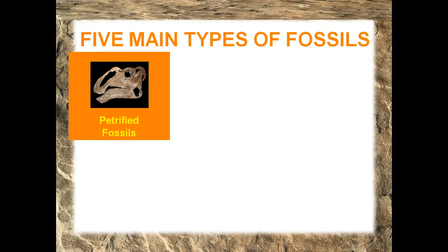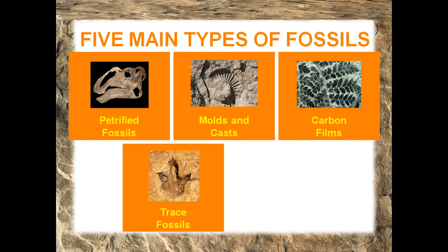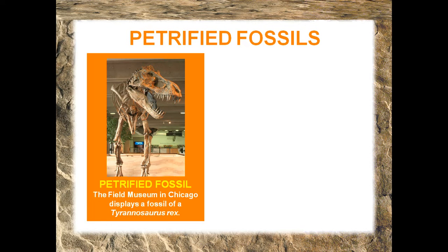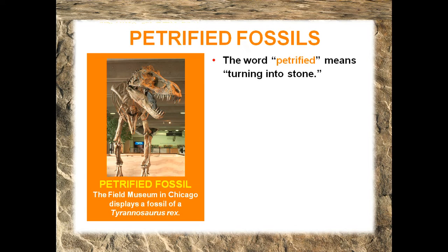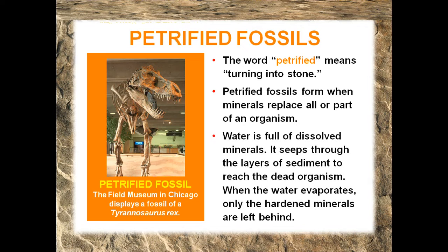There are five main types of fossils: petrified fossils, molds and casts, carbon films, trace fossils, and preserved remains. Petrified fossils — the word petrified literally means turning into stone. Petrified fossils form when minerals replace all or part of an organism. Water full of dissolved minerals seeps through the layers of sediment to reach the dead organism. When the water evaporates, only the hard minerals are left behind.